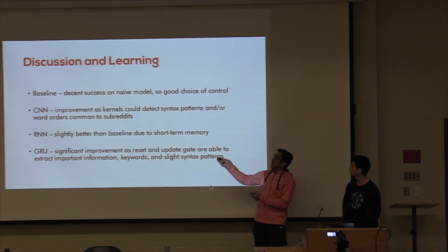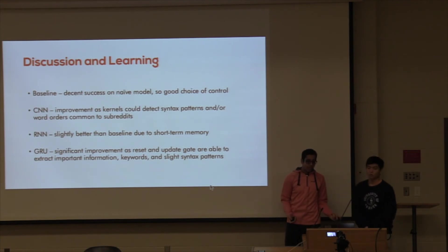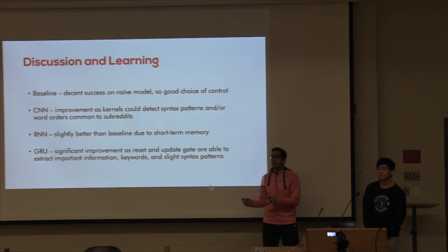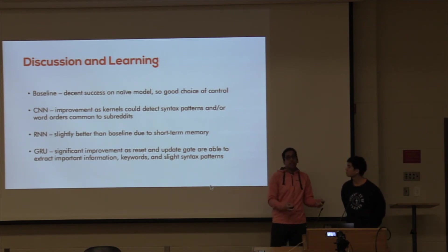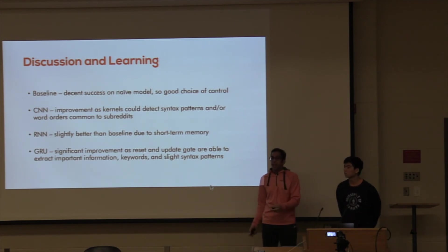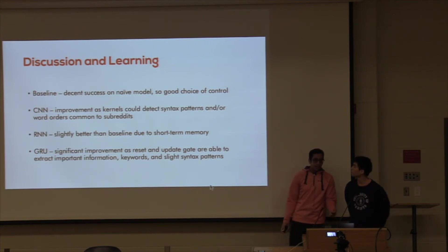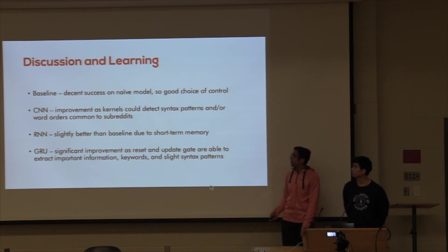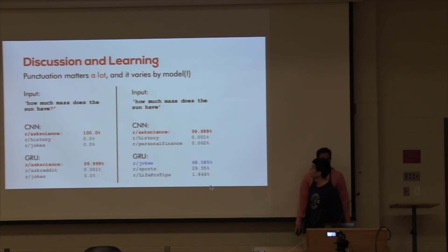The baseline performed about as well as expected. The CNN is a slight improvement, but a key problem was that max pooling isn't straightforward for variable-length text — we had to take the max instead, which introduces more error. For the RNNs, we have increased accuracy due to short-term memory, and the GRU is a further improvement since it also implements long-term memory.